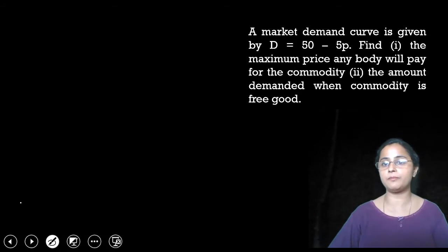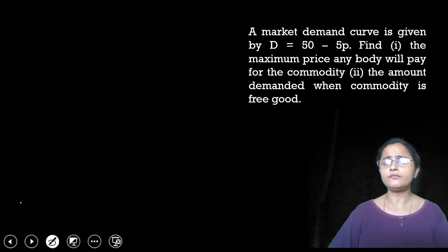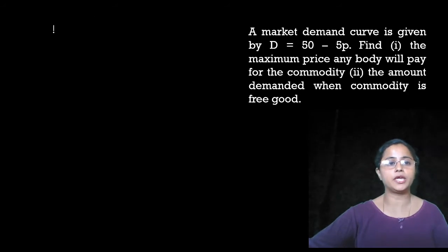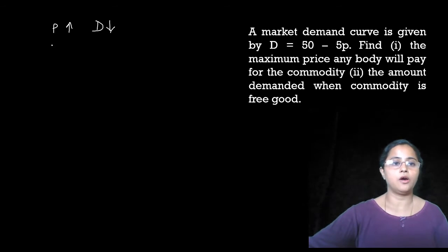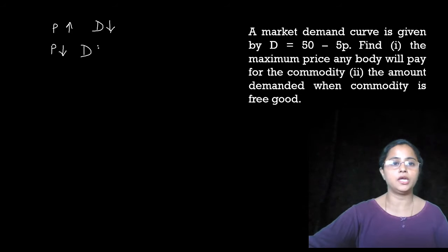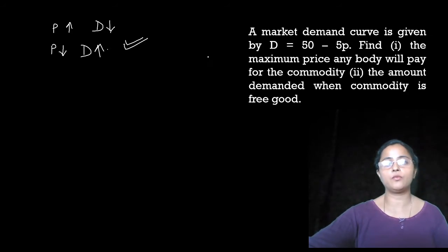The first question asks for the maximum price anybody will pay for the commodity. By the law of demand, we can see that when price increases, demand decreases, and when price decreases, demand increases. So we apply the law of demand to our question.